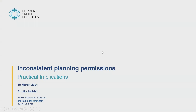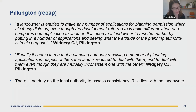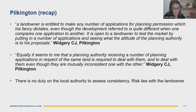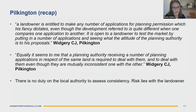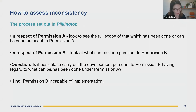So where does the law stand today? In a state of at least uncertainty and potentially some flux. We know about the basic operation of the Pilkington principle: if permissions clash, you can't build them both. What we don't know for sure is where the law will end up on the consequences of that principle operating. If you can't lawfully complete a scheme because of the Pilkington principle, are the bits already done legal or not? That's a big question the courts have yet to answer definitively. Zach passes the baton to Annika to discuss the practical implications.